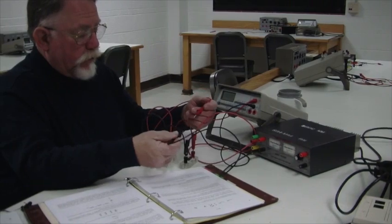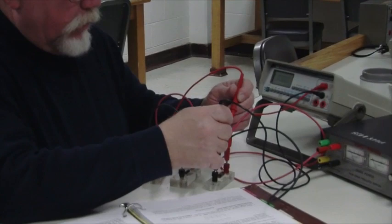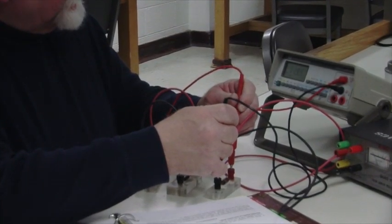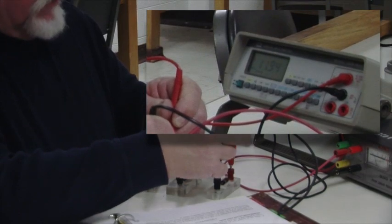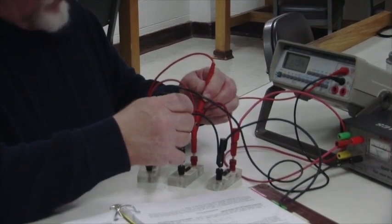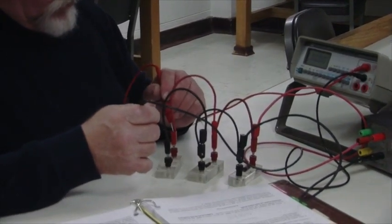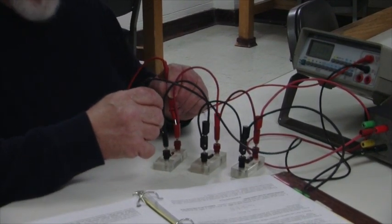I also want to measure the differences across each of the resistors in parallel. All right. 11.94. Got a little voltage loss over one of the wires. 11.94. And 11.94.